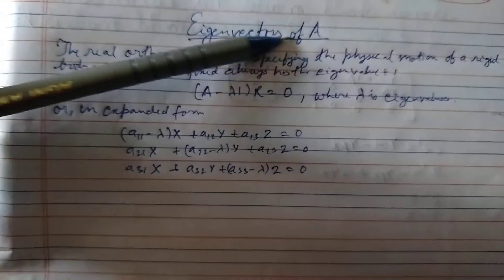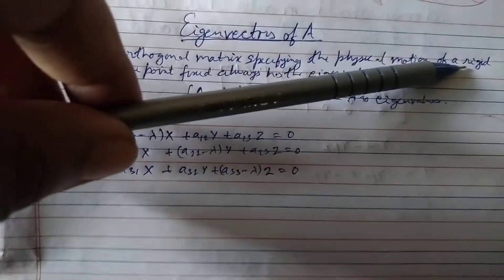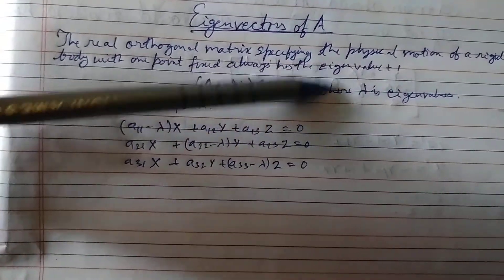Hi friend, today's topic is eigenvectors of A. The real orthogonal matrix specifying the physical motion of a rigid body with one point fixed always has the eigenvalue